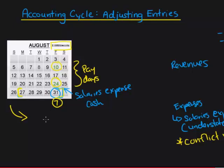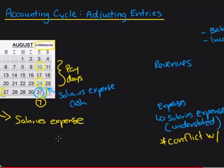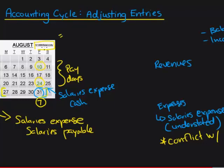Salaries expense is understated unless we report another expense for this week. So we're going to debit salaries expense. Since we're not paying them until the 7th of September, we need to show that we are going to pay them — which is salaries payable, a liability showing we'll pay them in the future. We're paying them $500 every week, which is half of $1,000. So the entry is: debit salaries expense $500, credit salaries payable $500.